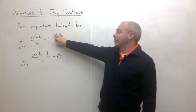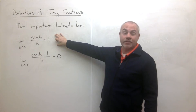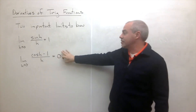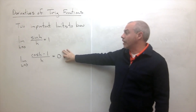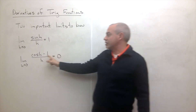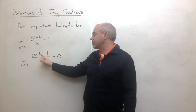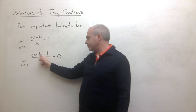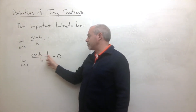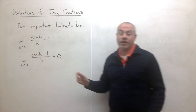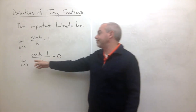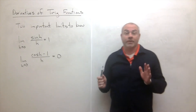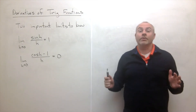Once you've proved that limit, the second important limit — the limit as h goes to zero of cosine of h minus one over h equals zero — is pretty easy to prove by multiplying the top and bottom of the fraction by cosine of h plus one.